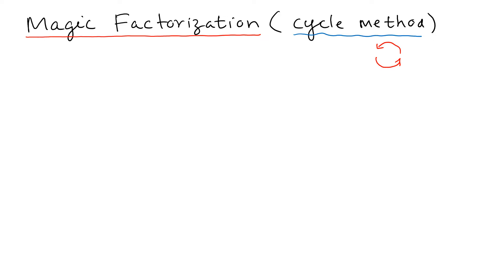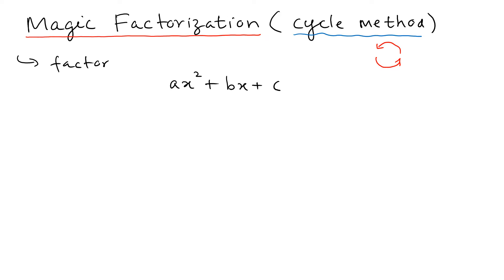The goal is to factor things like ax squared plus bx plus c. These are what we call trinomials, meaning there are three monomial terms.